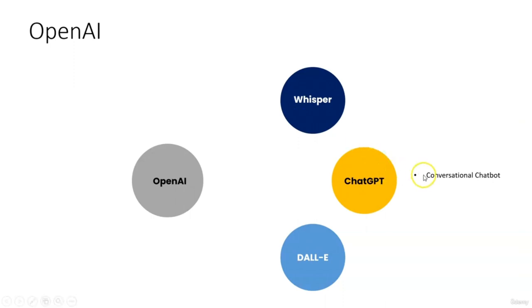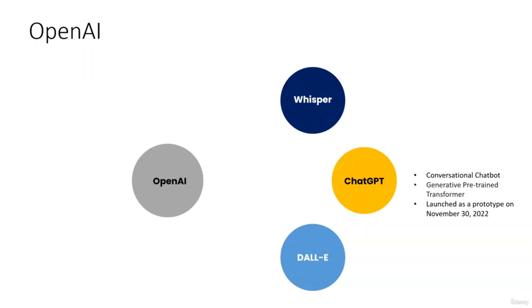ChatGPT is a conversational chatbot — you ask a question and it throws up answers. It is based on GPT, that is Generative Pre-trained Transformer. It was launched as a prototype on November 30, 2022, and has since gained more than a million users, with the number steadily increasing. It is used for a variety of things, from writing essays and assignments, even creating and debugging programs, to composing music and many more uses.